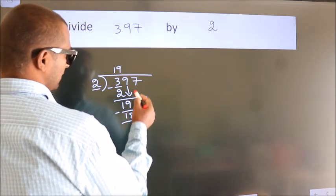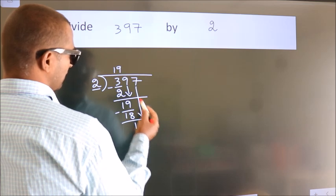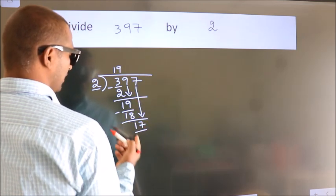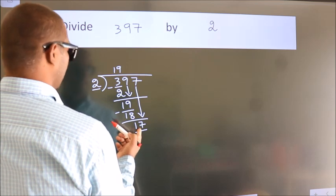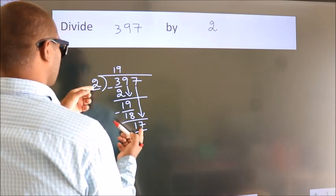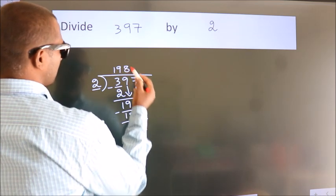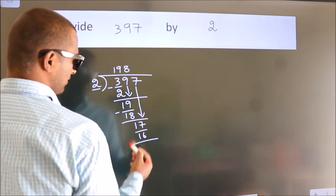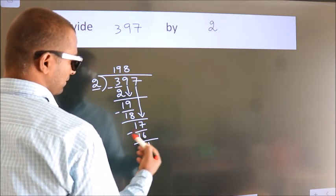After this, bring down the beside number. So, 7 down. So, 17. A number close to 17 in 2 table is 2 times 8 is 16. Now, we subtract. We get 1.